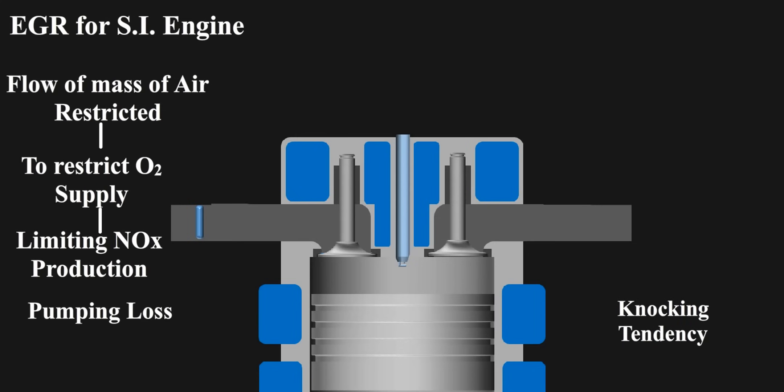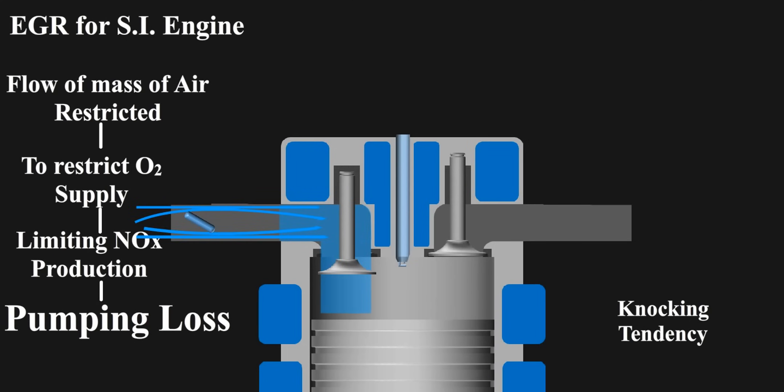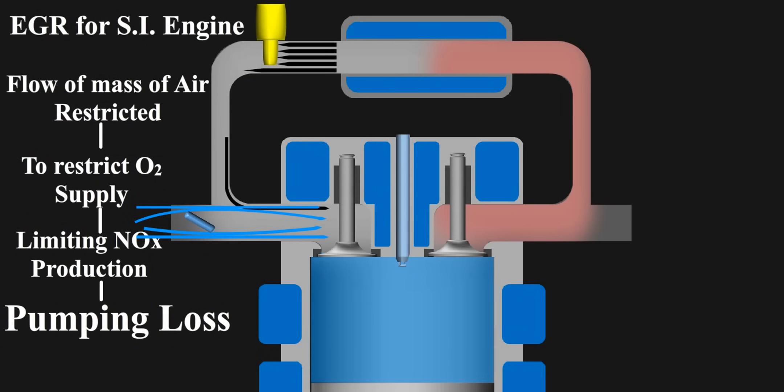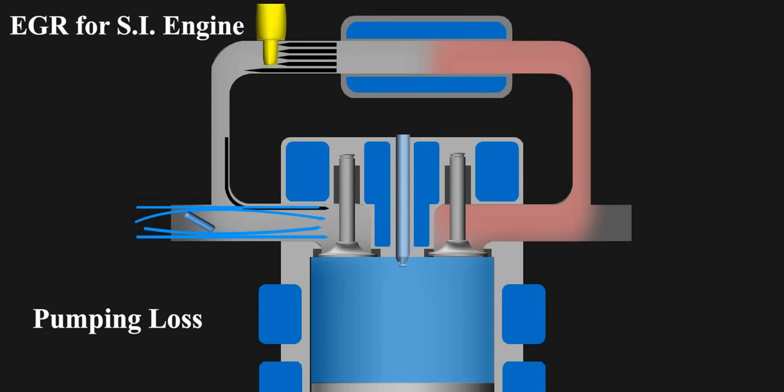But, this restriction in air supply results in increase in pumping losses. As, at suction, piston has to suck air from smaller opening. Opening here refers to the opening of throttle, which is reduced to restrict the mass of air. With EGR, you can allow more mass of air to enter, decreasing the pumping losses, while controlling the oxygen supply at same time.